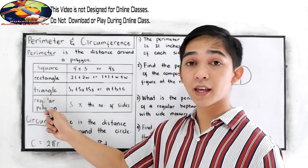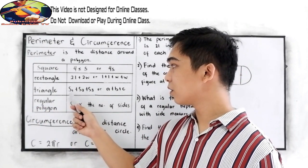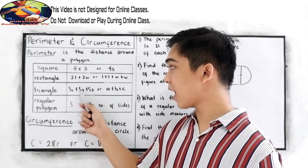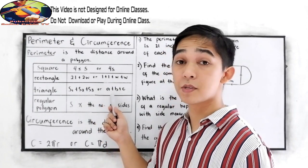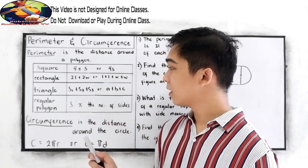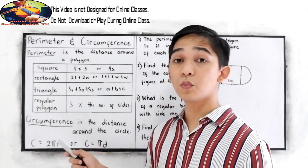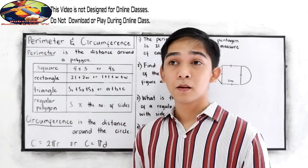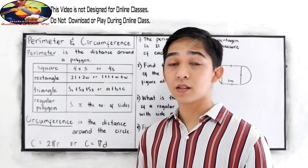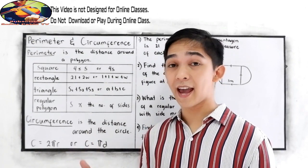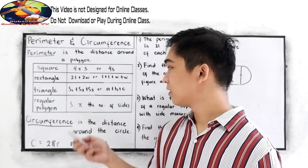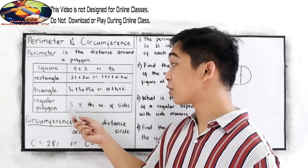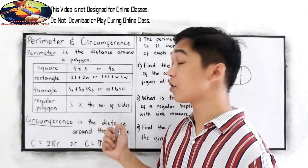We have a formula for triangle: the side one, the second side and the third side, or simply a plus b plus c. And for the regular polygon, when you say regular polygon, these are the polygons with equal sides. So the measure of the side times the number of sides.